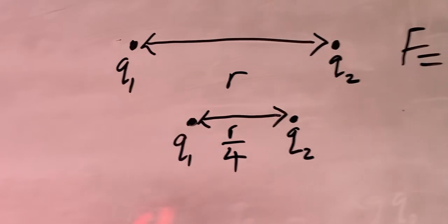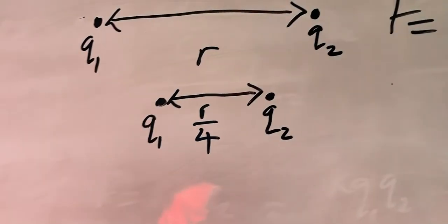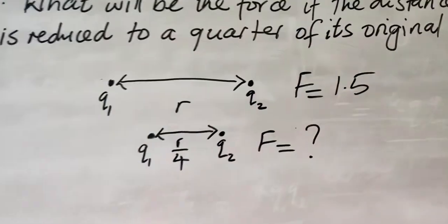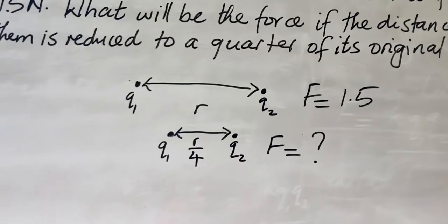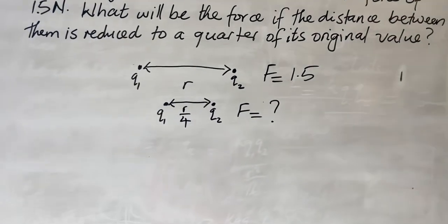So they said the f initially is 1.5 from the question, it's 1.5. So we want to find f after the distance between them has been reduced.